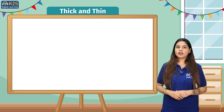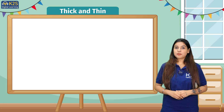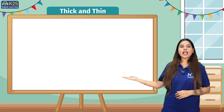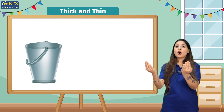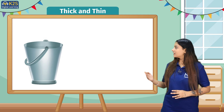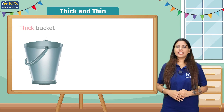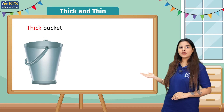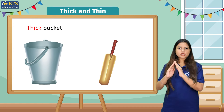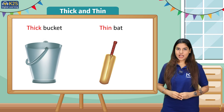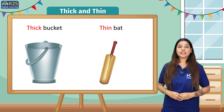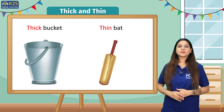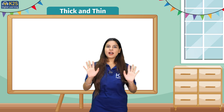Next we are going to study thick and thin. Thick yanaki moata and thin yanaki patla. Aap mein se kis kis ne Motu Patlu ka cartoon dekha hai? In one picture we have a bucket — a bucket is big and round in size, that is why this bucket is an example of thick, moata yanaki thick. On the other hand we have a picture of a bat — a bat is also round but it is thin, patla yanaki thin. This is called thick and thin. Okay students, I hope you enjoyed studying with me. Bye bye, see you next time.